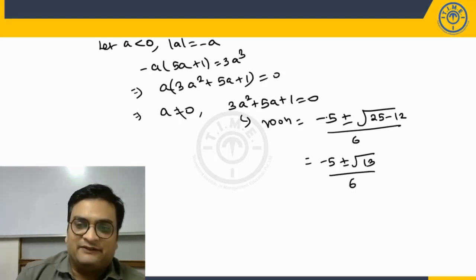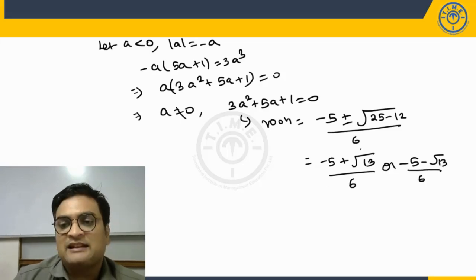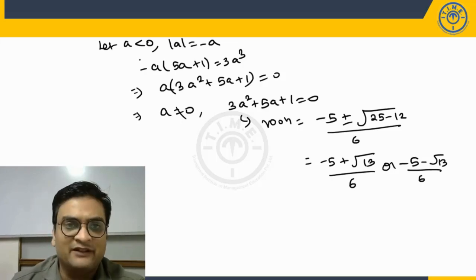We want a to be negative. And if you will see both these values with plus sign and also with minus sign, of course, are negative. So thus can I say both these are possible values for this initial range that we have taken for a less than 0.